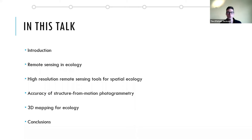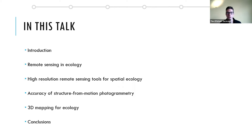In this talk we're going to follow the structure of the paper, so I'll start with a bit of an introduction and background to remote sensing in ecology, then discuss two high-potential, high-resolution remote sensing tools that can be used in field ecology and spatial ecology. I'll discuss accuracy concerns and ways to address them, particularly for structure from motion photogrammetry, and then talk about areas where 3D mapping has a lot of potential for ecology.